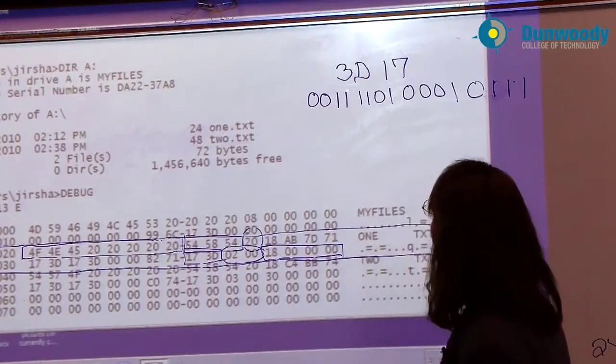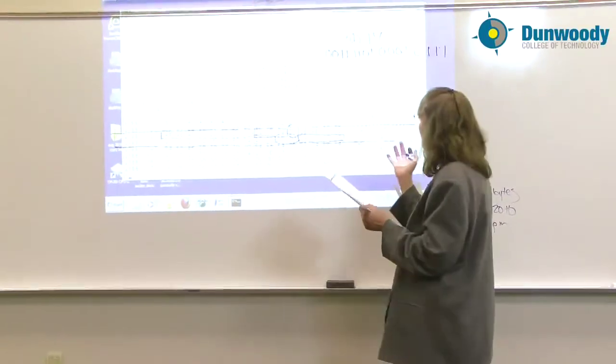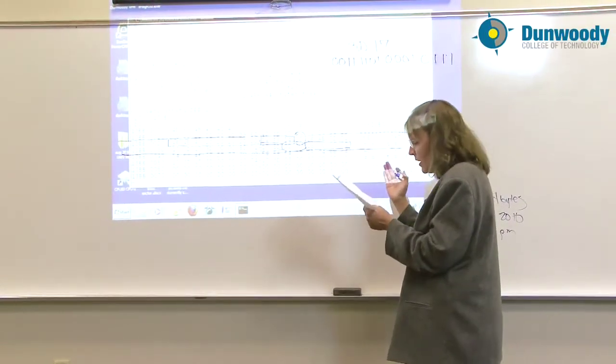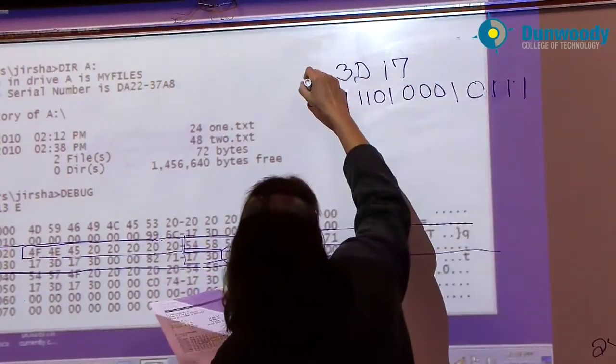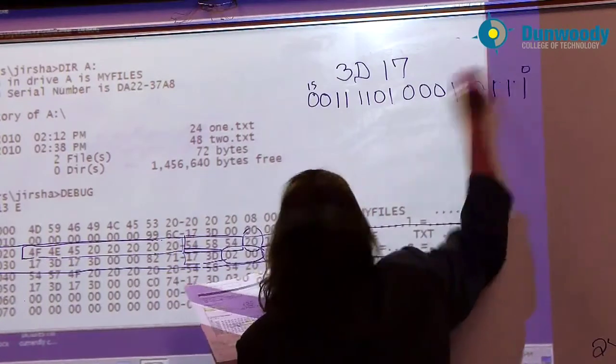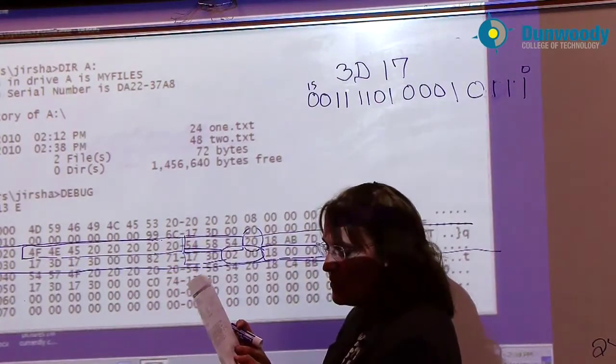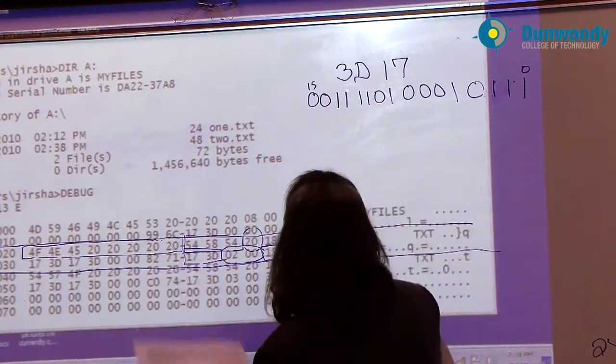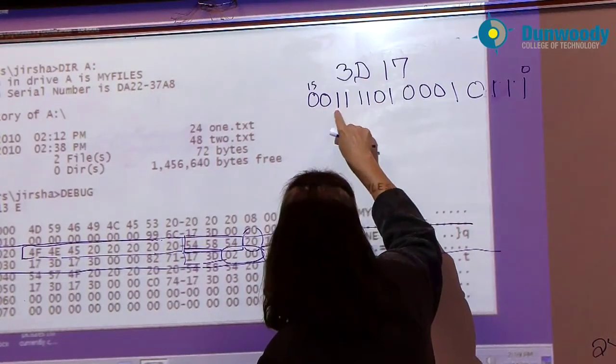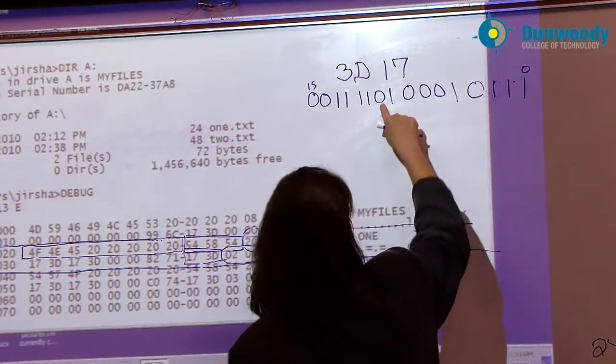Now what do we do with this? We're going to have to see which bits mean what. And the format for date is - bits, this is bit 15 and this is bit 0. Bits 15 through 9 are the year offset from 1980. 15, 14, 13, 12, 11, 10, 9.